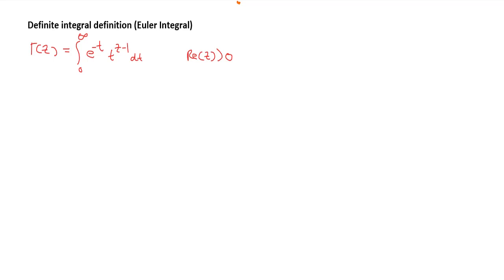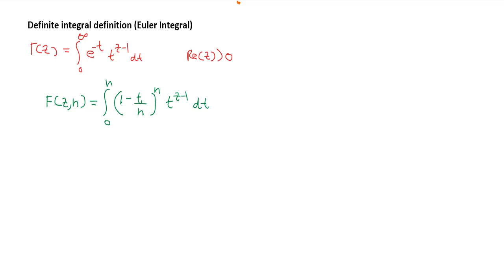We will prove that this definition is equivalent to the infinite limit definition by Euler. To do that, consider the function f(z, n), which is equal to the integral from 0 to n of (1 minus t over n) raised to n, times t raised to z minus 1, dt, where n is a positive integer.